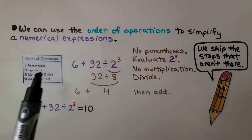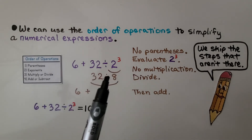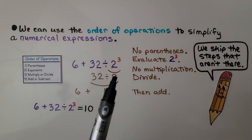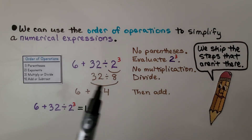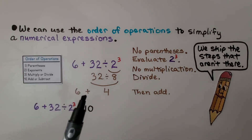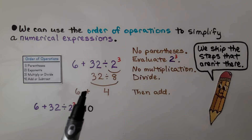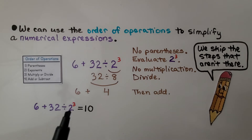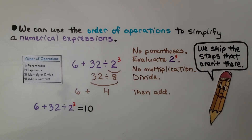We don't have any multiplication, so we divide. We have 32 divided by 8, which gives us 4. Then we add or subtract whichever comes first. There's no subtraction, so we add: 6 plus 4. So 6 plus 32 divided by 2 raised to the third power equals 10. We skip any steps that aren't present.